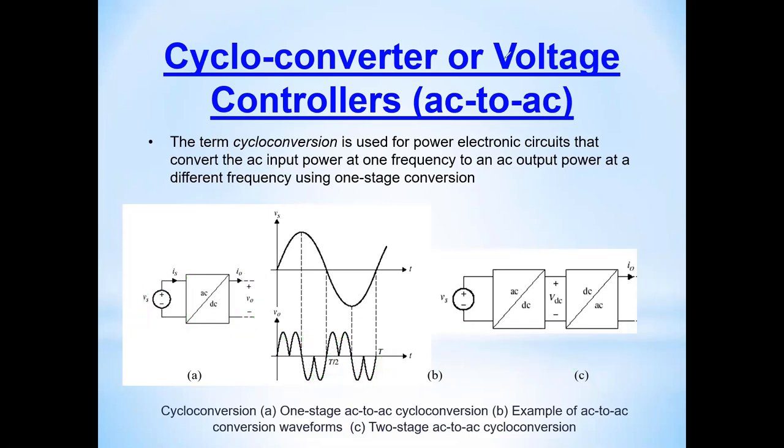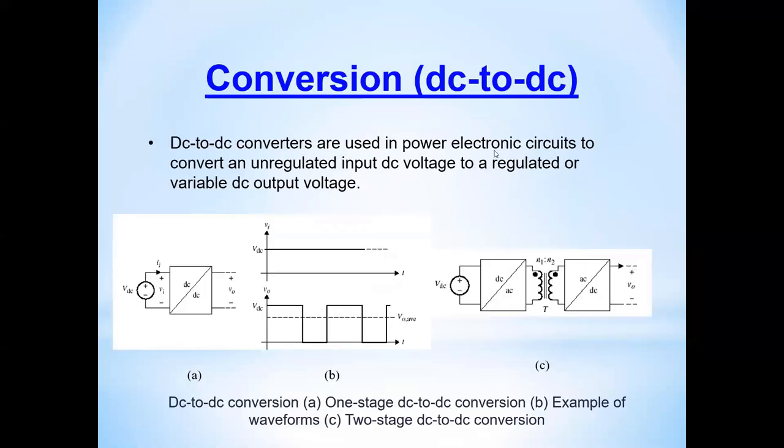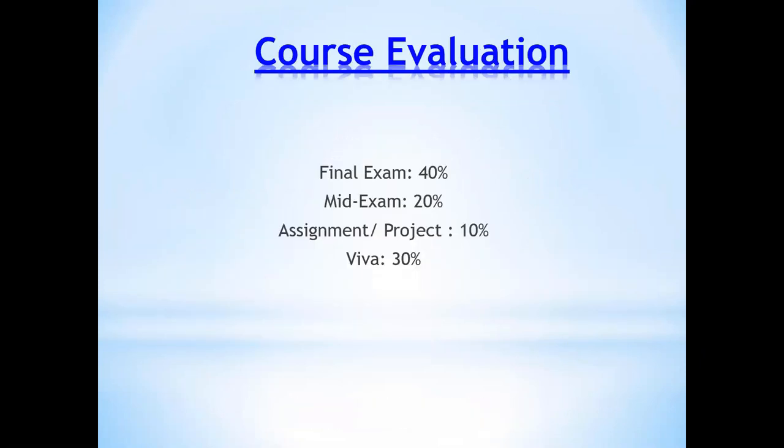We can see these are the converters. Another one is our matrix converter, like matrix switches. There is a bidirectional switch that can flow like this. This is called the matrix converter because it looks like a matrix switch. Then we have DC converters. You have unregulated input DC and regulated output DC. This is unregulated, this is regulated DC. We will read in detail. Sometimes when you use high-frequency transformers also, this DC is converted to AC, from AC again to DC. This way, we have DC to DC converter.